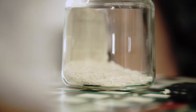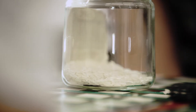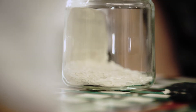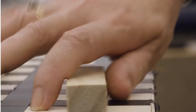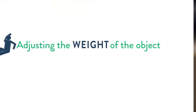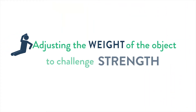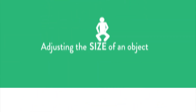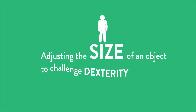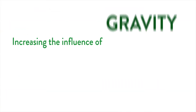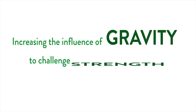Ways to shape an activity include adjusting the load — for example, adjusting the weight of the object to challenge strength, adjusting the size of the object to challenge dexterity, or increasing the influence of gravity to challenge strength.